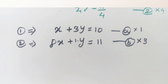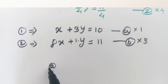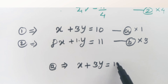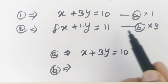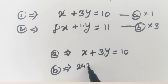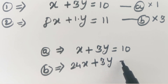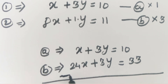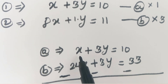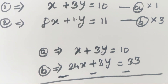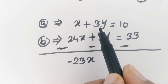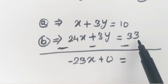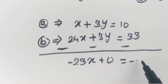After multiplying equation b by 3 throughout, we get: 8 times 3 is 24x, and 3 times 1 is 3y, equals 11 times 3, which is 33. Now subtract: the minus sign is multiplied to the whole subtracted equation. So x minus 24x gives minus 23x, and 3y minus 3y equals 0. The right-hand side is 10 minus 33, which equals minus 23. So we get minus 23x equals minus 23.